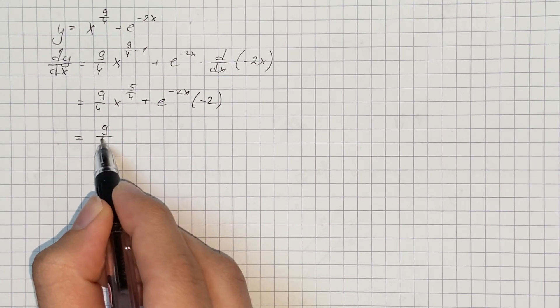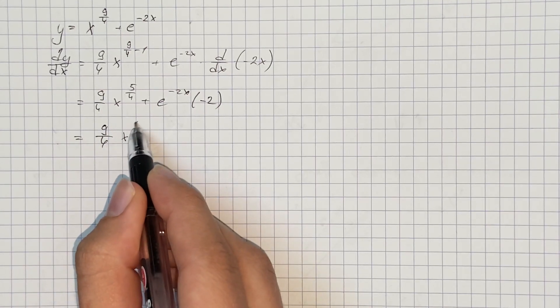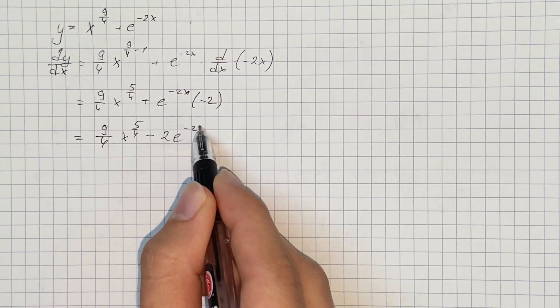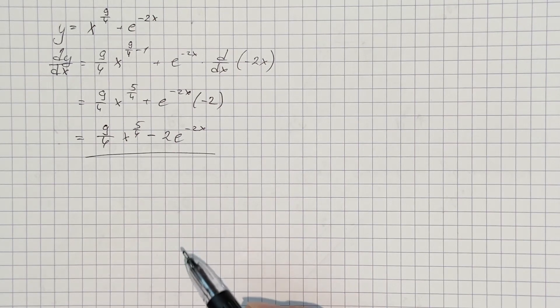Therefore, our derivative equals 9 over 4x to the power of 5 over 4 minus 2e to the power of negative 2x. That's the derivative of the given function.